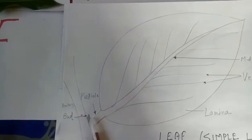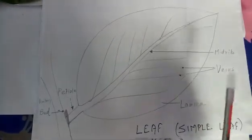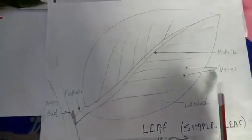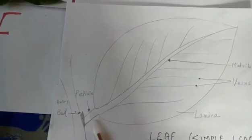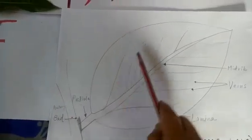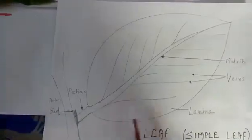In this figure I have drawn the different parts of a leaf. The parts are: petiole, lamina, midrib, and veins. The petiole holds the other part, lamina, to the stem or branch.